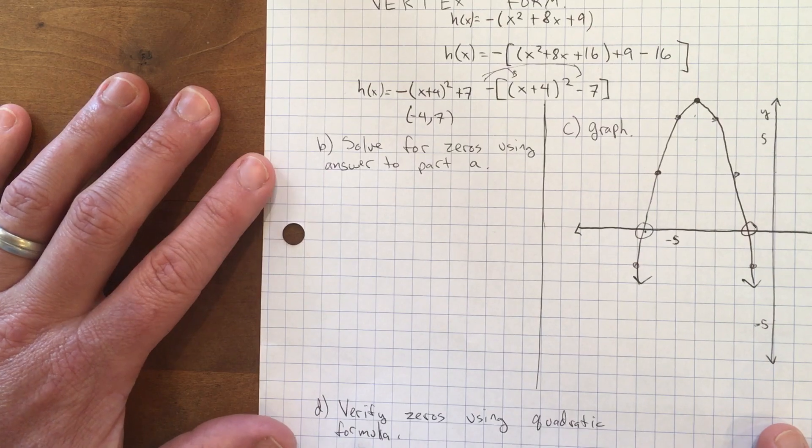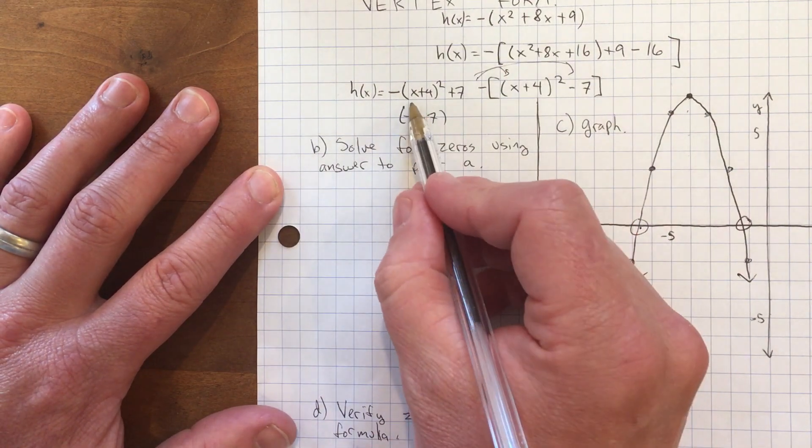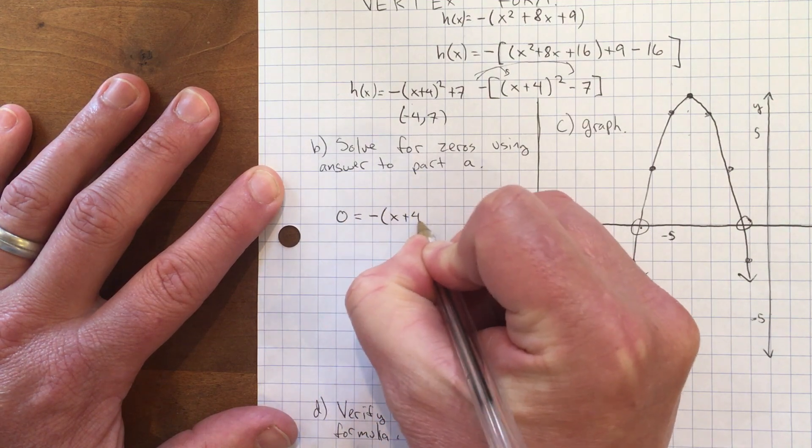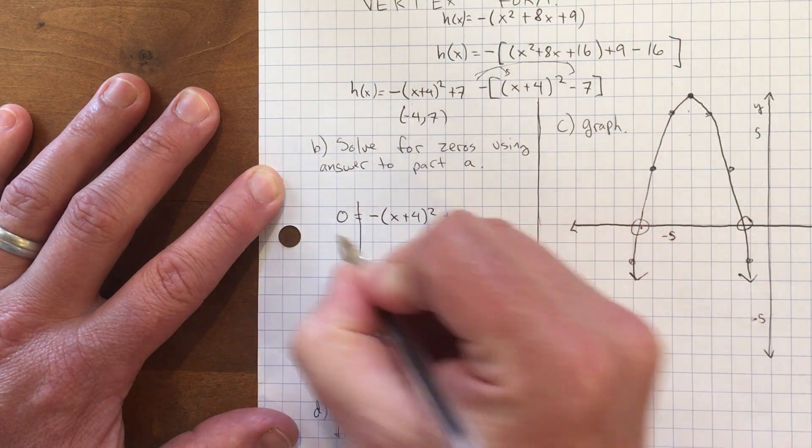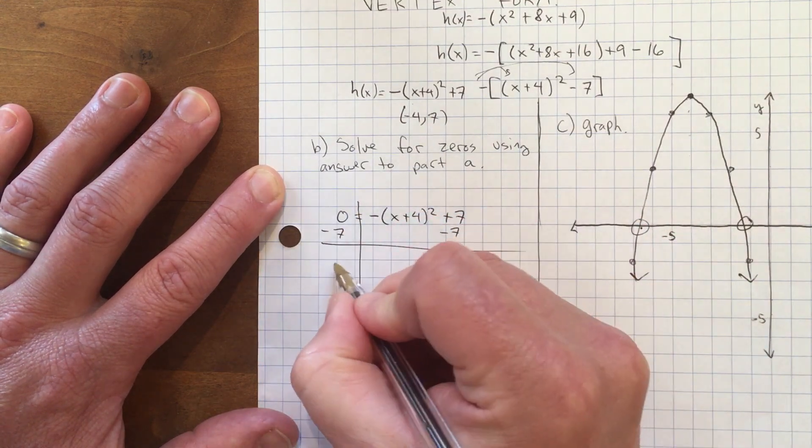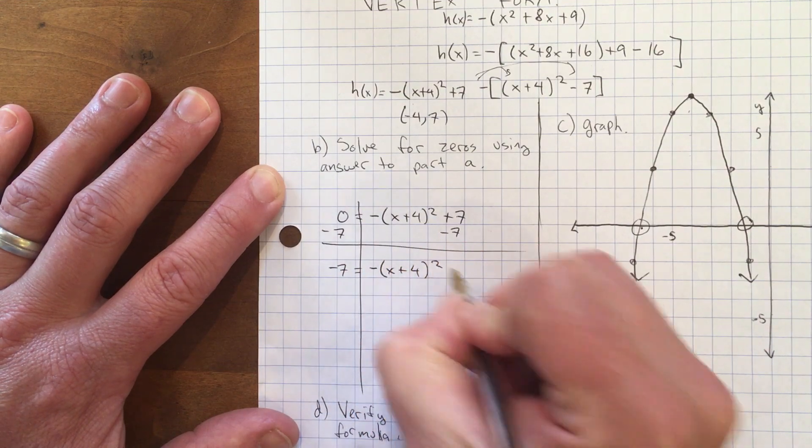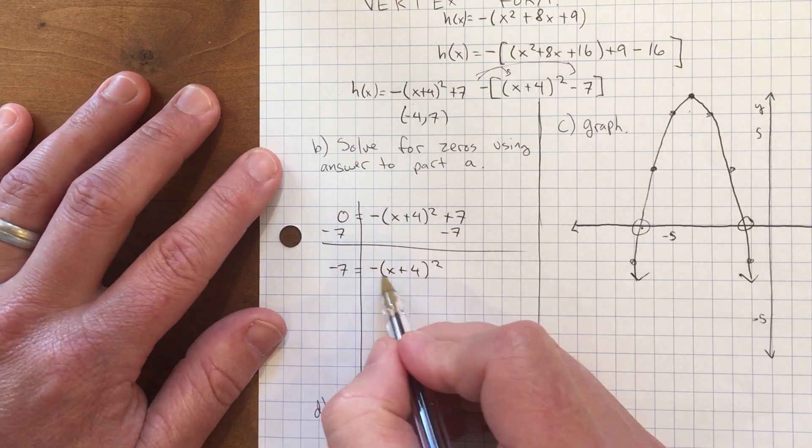I'm just not going to worry about the decimals. Instead I'll take this thing and set it equal to zero: -(x + 4)² + 7 = 0. To get x by itself, I'll subtract 7 from each side to get -7 = -(x + 4)².